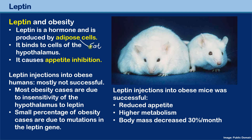Many fat cells in the body means more leptin production, which means appetite is decreased — this is an example of negative feedback. They tried to inject leptin into overweight humans, but it was mostly not successful, because most obesity cases are due to insensitivity of the hypothalamus to leptin, and not because there was insufficient leptin in the first place.